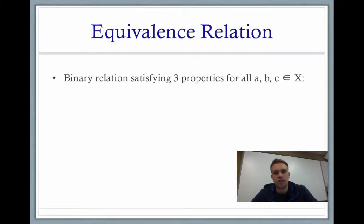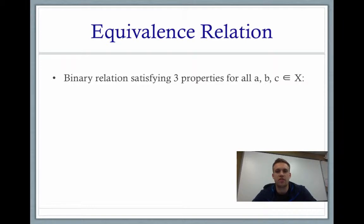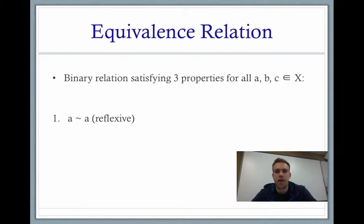When we're talking about equivalence classes, we have to talk about equivalence relations. An equivalence relation is just a binary relation satisfying three properties for all A, B, and C in the set X. The first property is what we call the reflexive property: for all A in the set X, A is going to be equivalent to A.